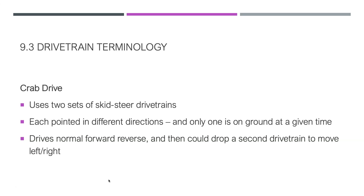Crab drive is a bit more complicated. It uses two sets of skid steer drivetrains: two wheels motored to move forward and backward, and two wheels motored to move horizontally, perpendicular to the first pair. Only one set is on the ground at a given time — that's why it's called crab, because it can move up and down. To move forward-backward, those wheels are on the ground and the horizontal wheels are raised. To move horizontally, you lift the forward-backward wheels and put the horizontal ones down. It has a zero turning-point radius and can be made quite fast.